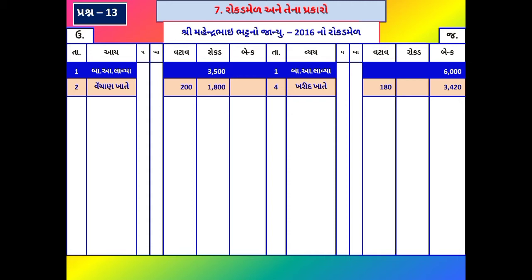અમીએ 44% રકમ રોકડેથી અને બાકીની ચેકથી ચૂકવી. સમગ્ર રકમ ચૂકવાઈ, તેથી વ્યક્તિનું ખાતું ઉદ્ભવે. વેચાણ વ્યવાર; સાત હજારમાંથી 2,800 રોકડા મળ્યા, બાકી 4,200 ચેક દ્વારા; 2,800 રોકડ ખાનામાં અને 4,200 બેંકના ખાનામાં ઉધાર બાજુ નોંધવામાં આવશે.